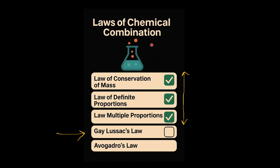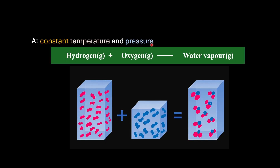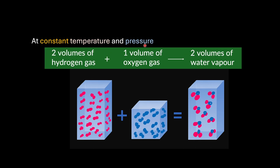To understand, let's consider the formation of water vapour from hydrogen gas and oxygen gas at constant temperature and pressure. What was observed experimentally was two volumes of hydrogen gas combined with one volume of oxygen gas to produce two volumes of water vapour.